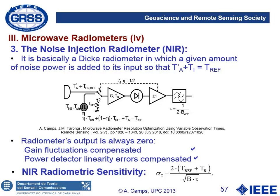To completely eliminate the effect of gain fluctuations, we use the noise injection radiometer: noise is added to the input in a controlled manner so that the sum of antenna temperature plus injected noise always equals the reference resistor temperature, keeping the output continuously at zero. This makes it independent of gain fluctuations and power detector nonlinearity. However, the price is that radiometric sensitivity is twice that of the total power radiometer.